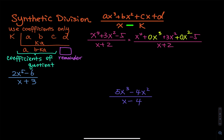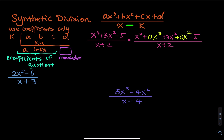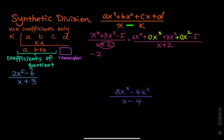You have to complete the missing degrees using zero coefficients — zero x to the third and plus zero x squared. For synthetic division, we only need to use the coefficients. So for the dividend the coefficients are: one, zero, three, zero, and negative five. This is divided by x minus k, but we have a plus two, so k is equal to negative two. We put negative two in the synthetic division setup. Don't make mistakes on this — it is so easy to forget the plus and minus issue.